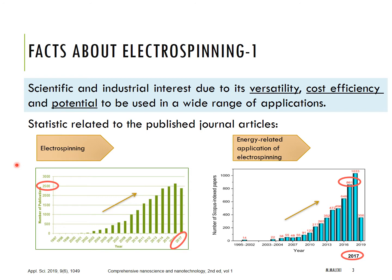There is an increased amount of scientific and industrial interest in electrospinning due to its versatility, cost efficiency, and potential to be used in a wide range of applications. The statistics related to published journal articles have been increasing exponentially since 1997, and the amount of papers dealing with energy applications of electrospinning nanomaterials has also increased, as you can see.